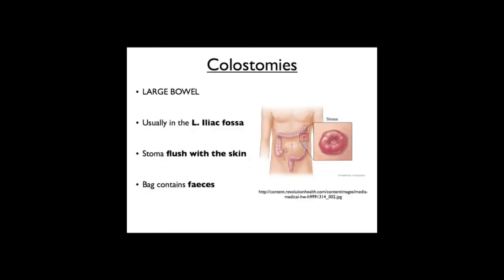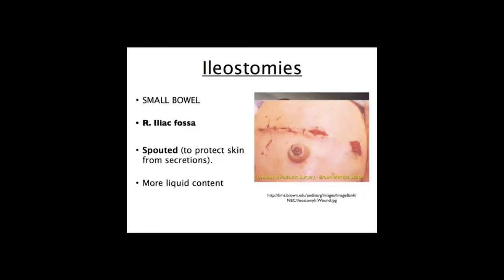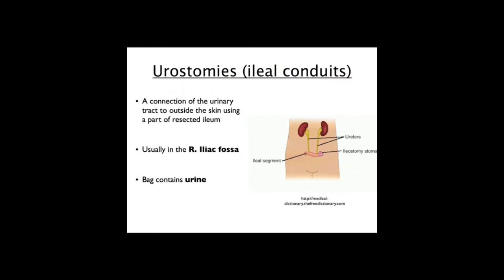Colostomies come from the colon (large bowel) and are commonly found on the left side in the left iliac fossa. The stoma can be flush with the skin and the bowel contains more solid faecal components. Ileostomies come from the small bowel and tend to be found in the right iliac fossa. They are spouted because secretions from the ileum may irritate the skin, and the content is more liquid. Urostomies, or ileal conduits, are connections from the urinary tract to outside the skin - a part of the ileum is resected, the ureters are fed into it, and it passes through the skin, also typically in the right iliac fossa, with the bag containing urine rather than faeces.